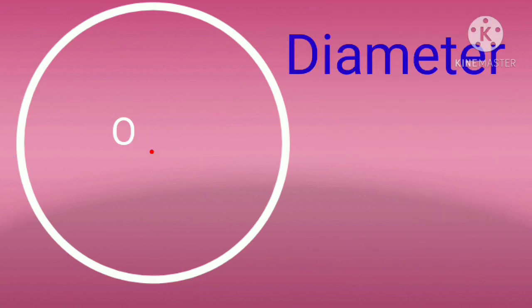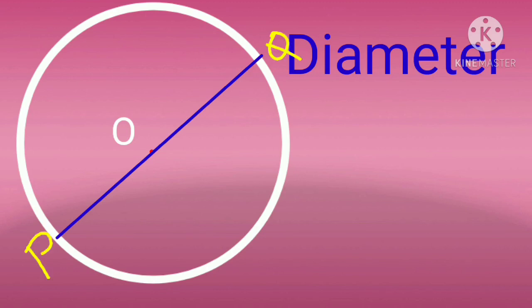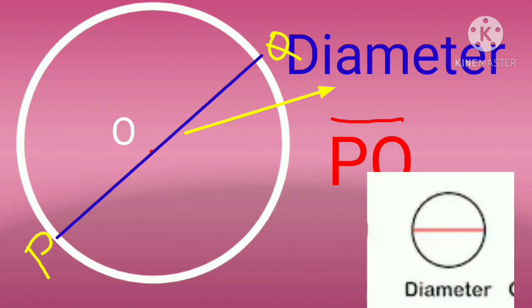The next part is diameter. A line segment joining any two points of the circle passing through the center is called the diameter of the circle. In this, center O, and P and Q are two points on the circle. When we connect P and Q through the center, PQ is the diameter of the circle. The diameter is also the largest chord in the circle.